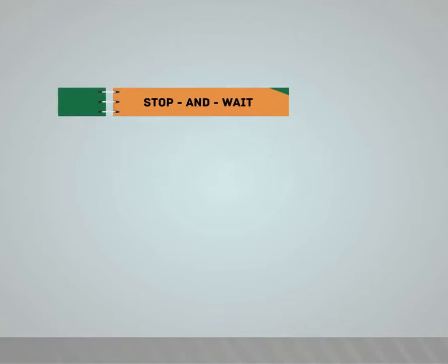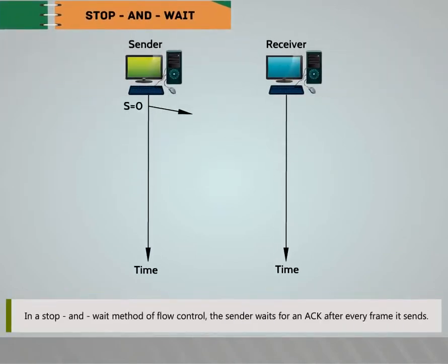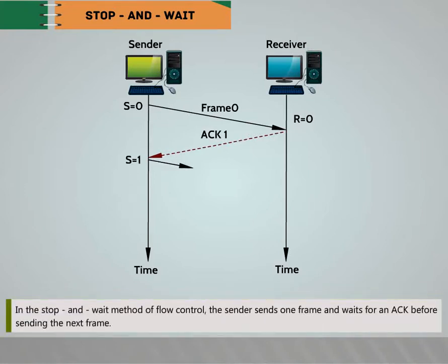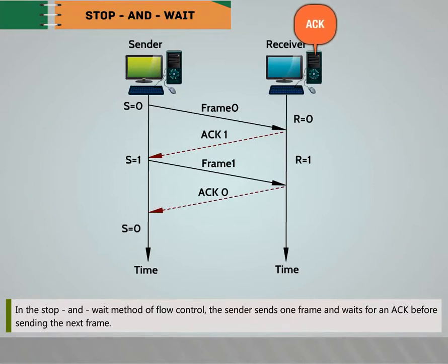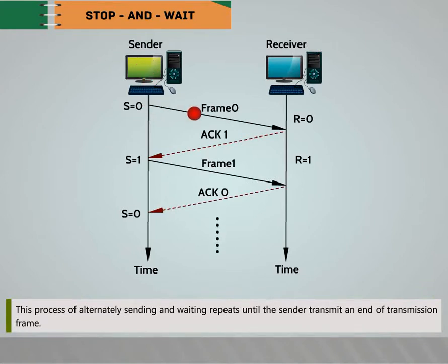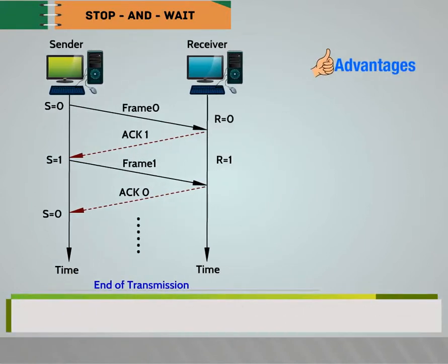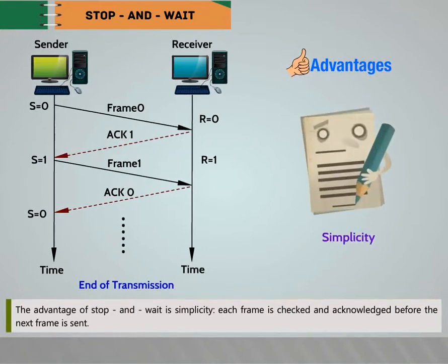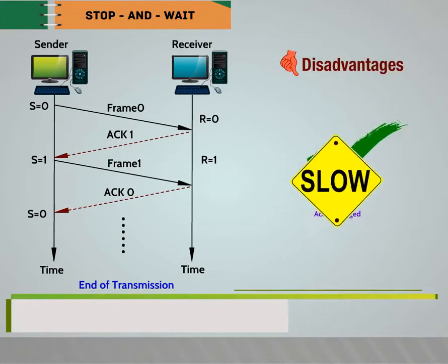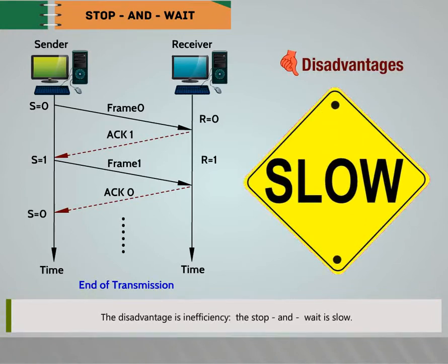In the Stop and Wait method, the sender sends one frame and waits for an acknowledgement before sending the next frame. This process of alternately sending and waiting repeats until the sender transmits an end-of-transmission frame. The advantage is simplicity: each frame is checked and acknowledged before the next is sent. The disadvantage is inefficiency — Stop and Wait is slow.